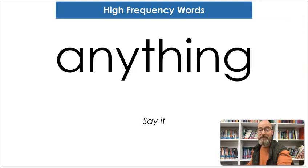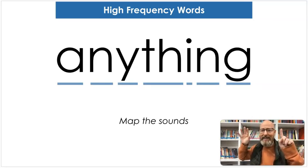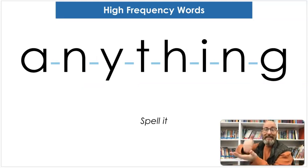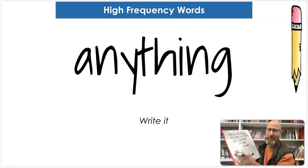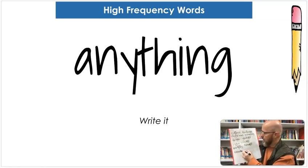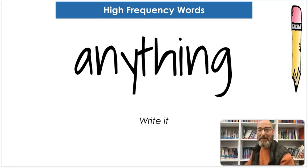And our last word is 'anything.' Say anything. Map the sounds: I-N-E-E-T-I-N-G. Anything. That N-G should be together. Spell it: A-N-Y-T-H-I-N-G. Anything. And let's write: A-N-Y-T-H-I-N-G. And we are done — that was the last word. Until next time, happy reading!